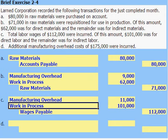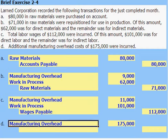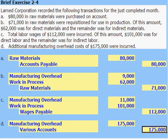Item D: additional manufacturing overhead costs of $175,000 were incurred. When we incur actual manufacturing overhead, we debit the manufacturing overhead account for the $175,000 and credit various payable accounts or perhaps cash. We will not credit manufacturing overhead until we actually apply overhead to a job, and that's done using our predetermined overhead rate and some actual level of activity.